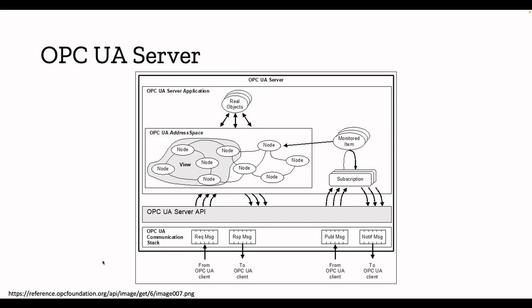Now let's deep dive a little bit into the technical components. As I mentioned, it's a client-server model. For the OPC UA server, these are the components: OPC UA server application, real objects — which can be sensors, PLCs, or any of your devices — then OPC UA address space, nodes, monitored items, subscriptions, OPC UA server APIs, and communication stacks. The server application basically contains all the functionalities of the server.